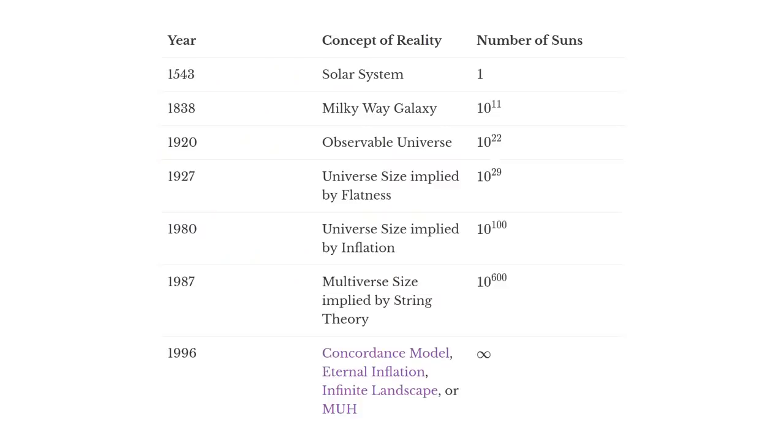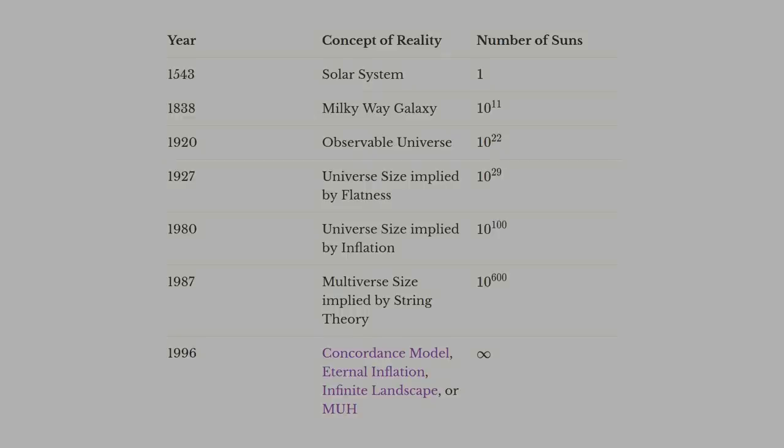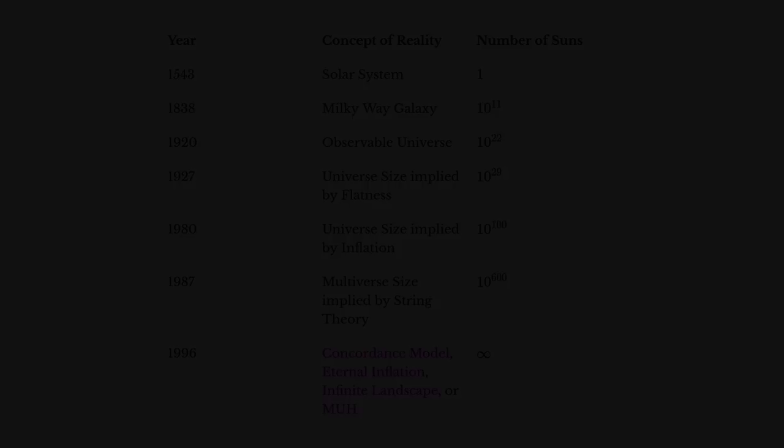Of course, all these numbers are lower bounds. The standard model of cosmology, called the concordance model, assumes a flat and spatially infinite universe. This alone gets us to an infinite number of stars. If the universe is not spatially infinite, then eternal inflation does the job. An infinite number of big bangs occurring for all eternity has no trouble producing infinite stars. Even if the universe is not spatially infinite, and even if inflation somehow stops, an infinite landscape from string theory or the MUH also fill reality with infinite stars. The consequences of an infinite reality cannot be understated.